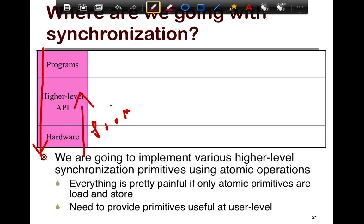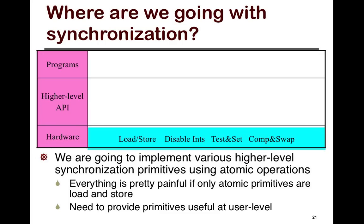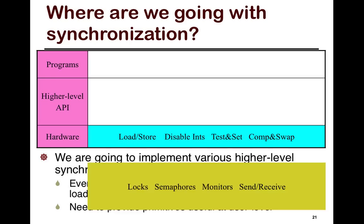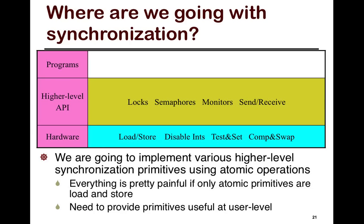The higher levels essentially provide abstractions for user-level programs. The primitives at each level: hardware provides load and stores, disabled interrupts, and atomic operations such as test-and-set and compare-and-swap that can be used to implement locks. The middle API provides things like locks constructed from low-level hardware operations, semaphores, monitors — both of which we look at in the next few weeks — and message-passing primitives such as send and receive.